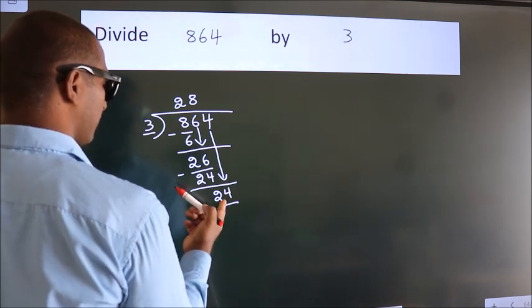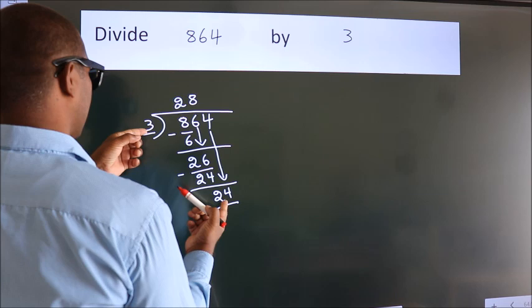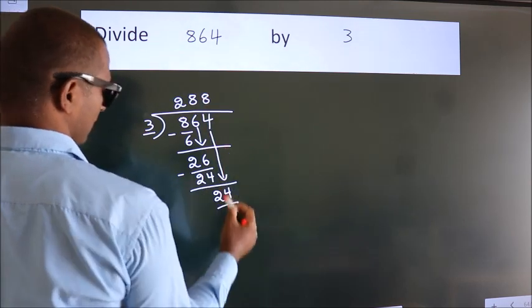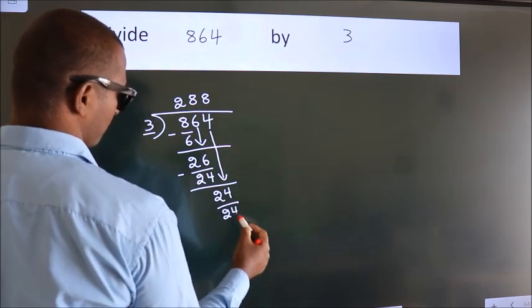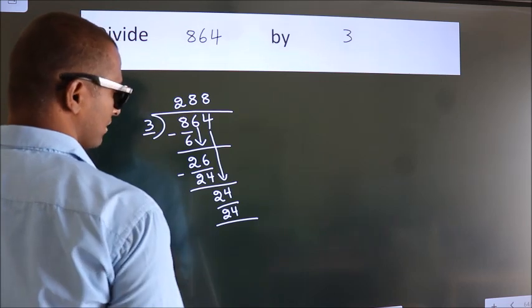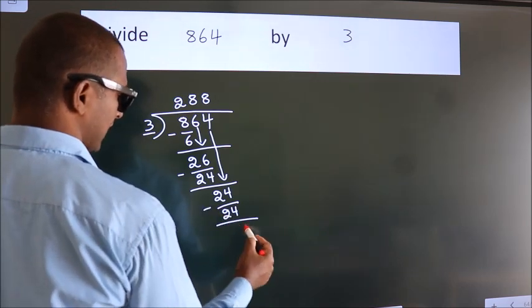When do we get 24? In 3 table. 3 8s, 24. Now, we subtract. We get 0.